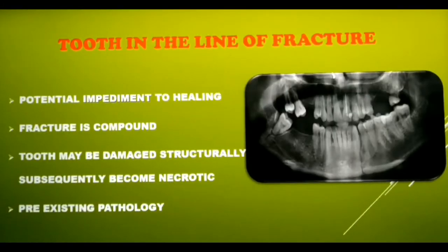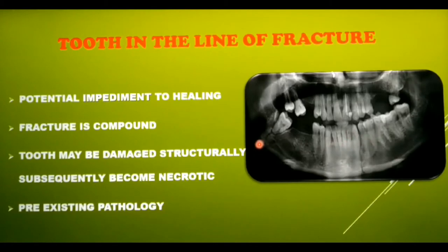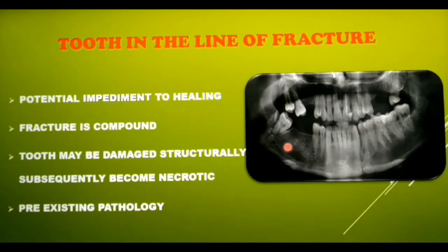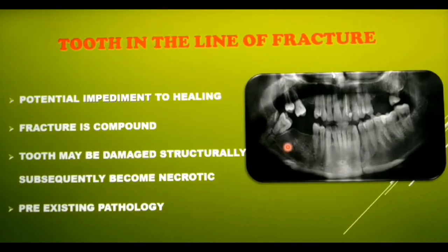Before moving on to the various treatment options of fractured mandible, let us quickly have a look at how to deal with a tooth that is within the fracture line. As you can see in this radiograph, canine and third molar lie within the fracture line. There are a few complications: this tooth is a potential impediment to fracture healing. It converts a simple fracture into a compound one, because through the tooth, the fracture is exposed to the oral cavity which is an external environment. Hence, it is a potential nidus of infection. The tooth may become necrotic, and if there is a pre-existing pathology associated with the tooth, it can aggravate or invade the mandible.